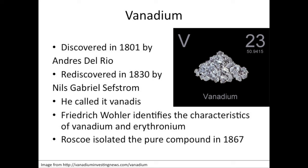Nils Gabriel Sefström rediscovered the compound in iron ore. Due to the colors produced by the unknown, he called it Vanadis which is a Scandinavian goddess of beauty. Friedrich Wöhler identifies the characteristics of vanadium and erythronium. Roscoe isolated the pure compound back in 1867 by reduction of chloride with hydrogen.